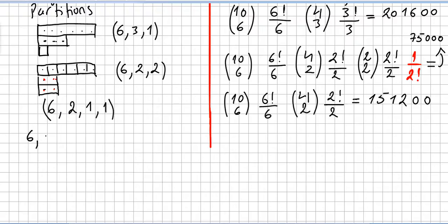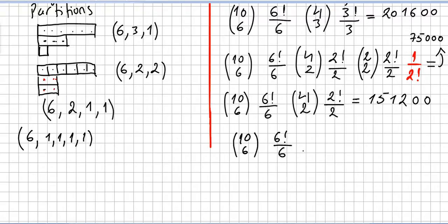Another obvious partition is (6, 1, 1, 1, 1, 1) — a 6-cycle and five fixed points. That's just combinations of 10 choose 6, times 6 factorial divided by 6. All remaining elements are 1-cycles, so it's straightforward. Please do the calculations.